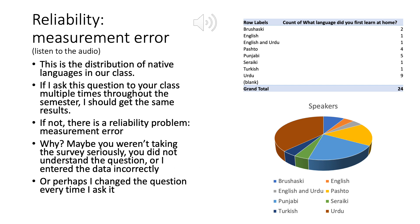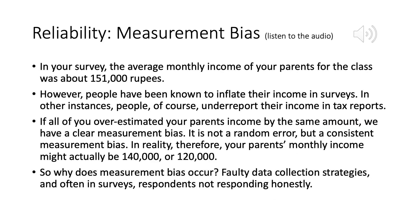It could also have happened that I changed the question slightly — from 'what language did you learn or speak at home' to 'what language do you speak in school' or something like that. If I changed the question like that, that will also affect reliability. Another problem that endangers reliability is measurement bias. Here it is not a random error, but a consistent error that's pulling the results in a particular direction.